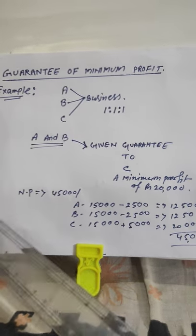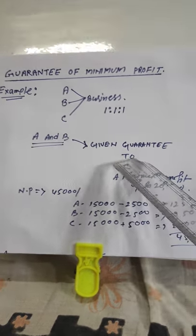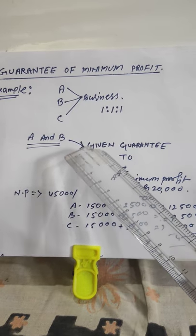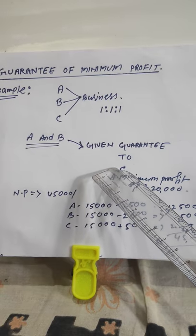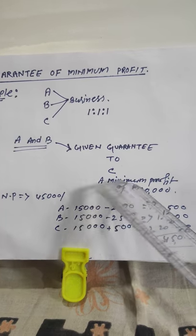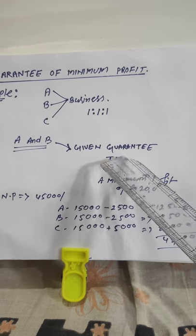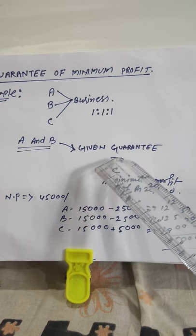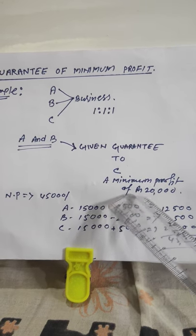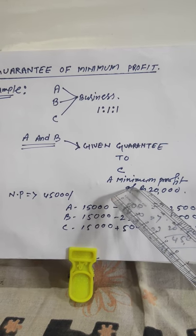Along with that, one more concept is given: A and B have jointly given a guarantee to C. What is the guarantee? The guarantee is a minimum profit of Rs. 20,000. That means in any situation, C's profit will be minimum Rs. 20,000. It may be more than that, no problem. But minimum profit will be Rs. 20,000. It means if C is getting less than Rs. 20,000 in any year, the shortage of profit will be given by A and B.